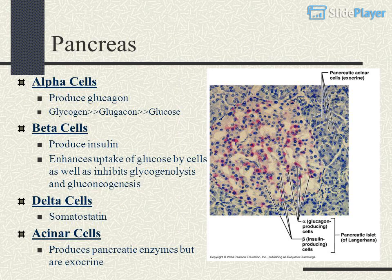Pancreas: alpha cells produce glucagon, which stimulates glycogenolysis and gluconeogenesis to raise blood glucose. Beta cells produce insulin, which enhances uptake of glucose by cells and inhibits glycogenolysis and gluconeogenesis. Delta cells produce somatostatin. Acinar cells produce pancreatic enzymes and are exocrine.